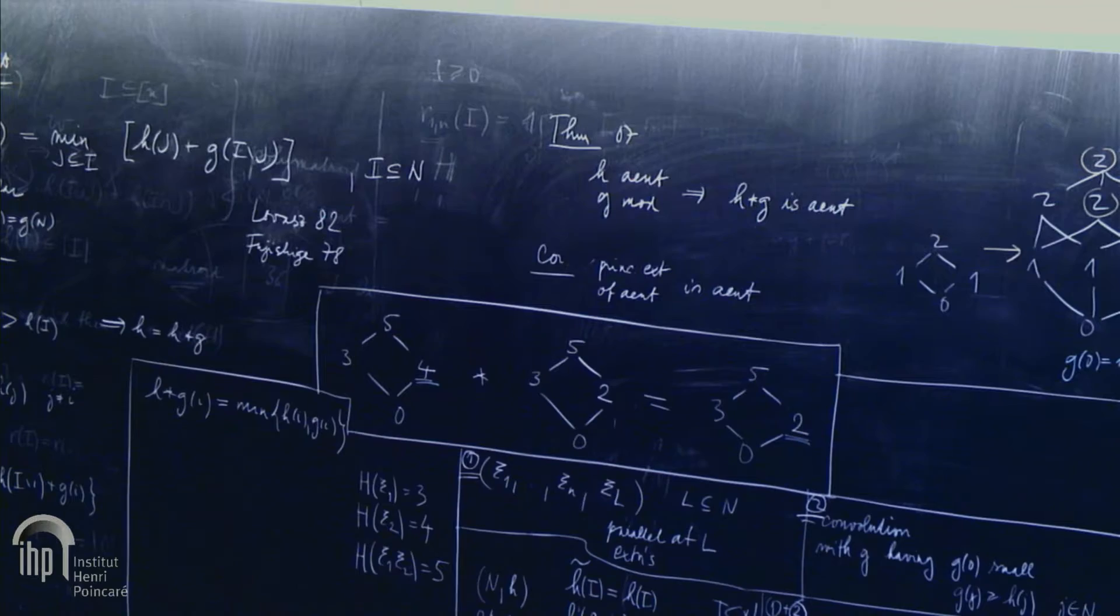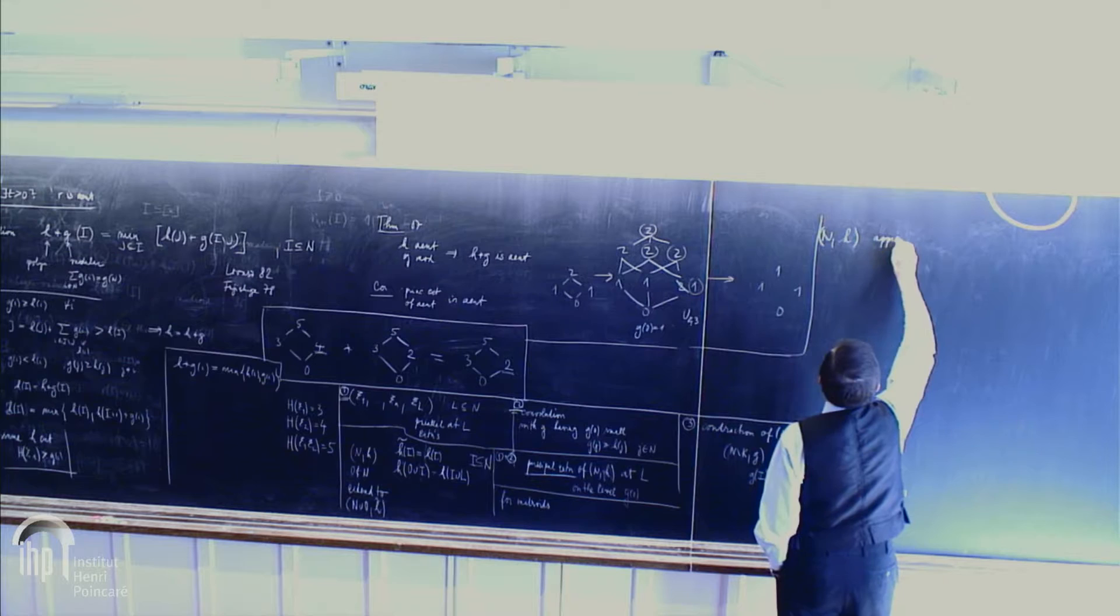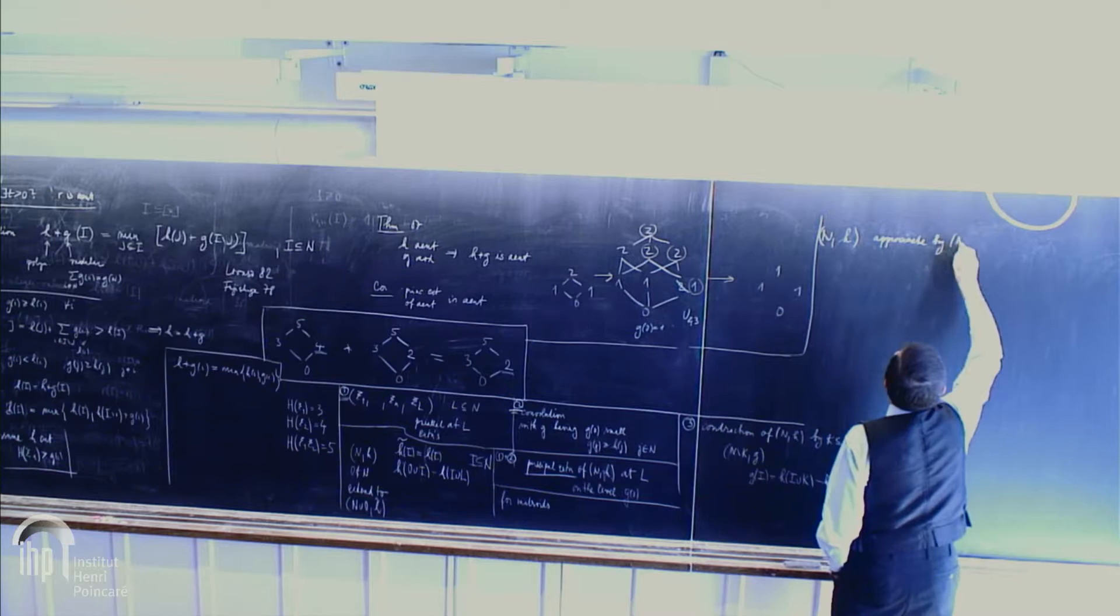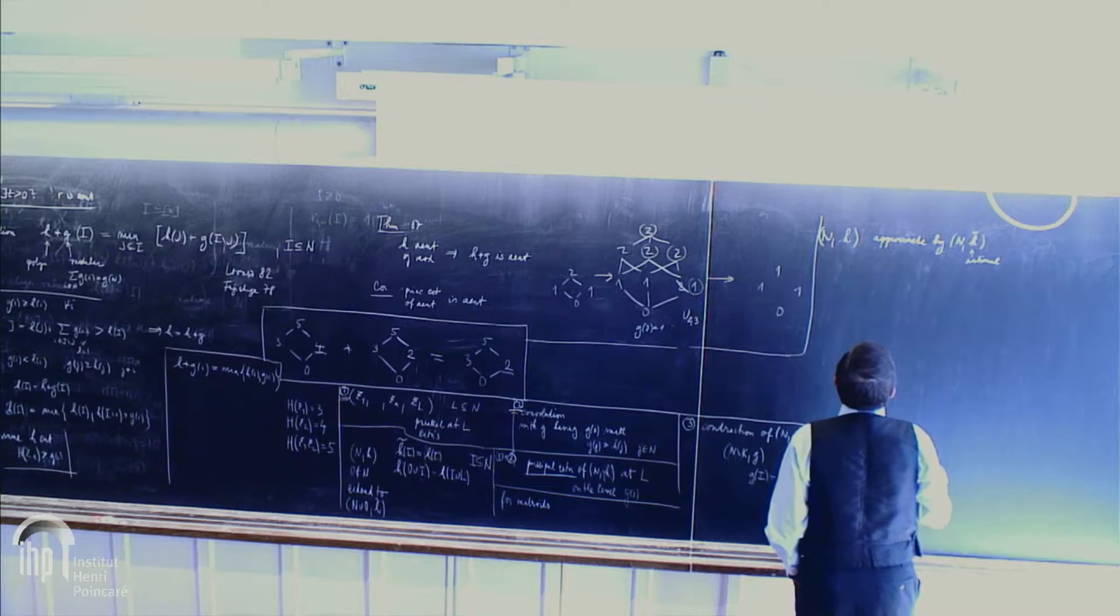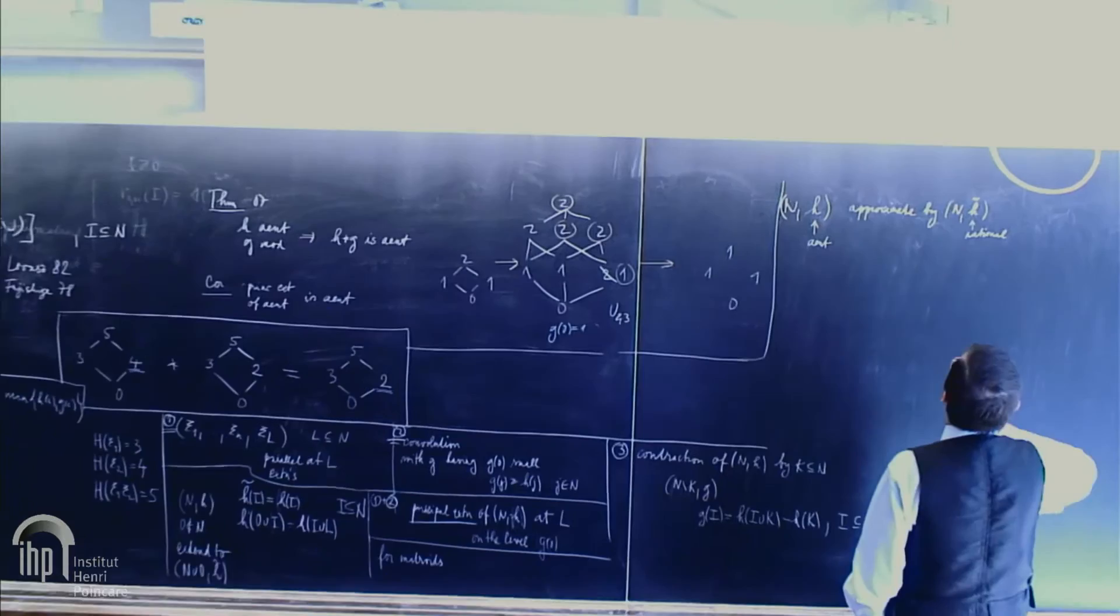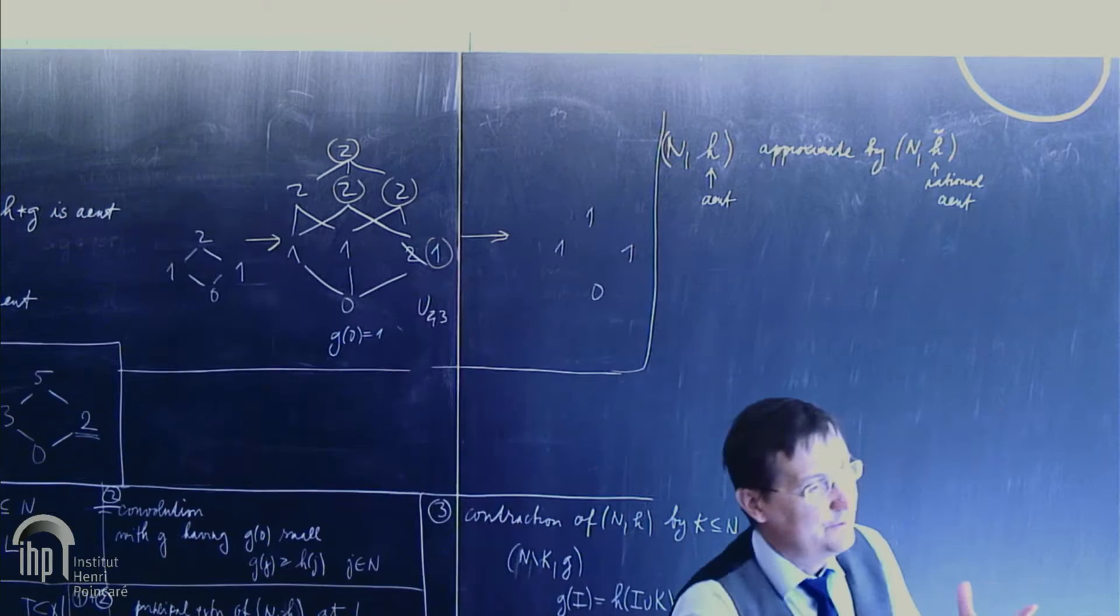then approximate by rational. By N, maybe H. This is rational. I will start again with almost entropic. This is possible because that interior of the cone is full. Yes. And everything, you can approach every point from inside and then you approach it by with something which is rational.